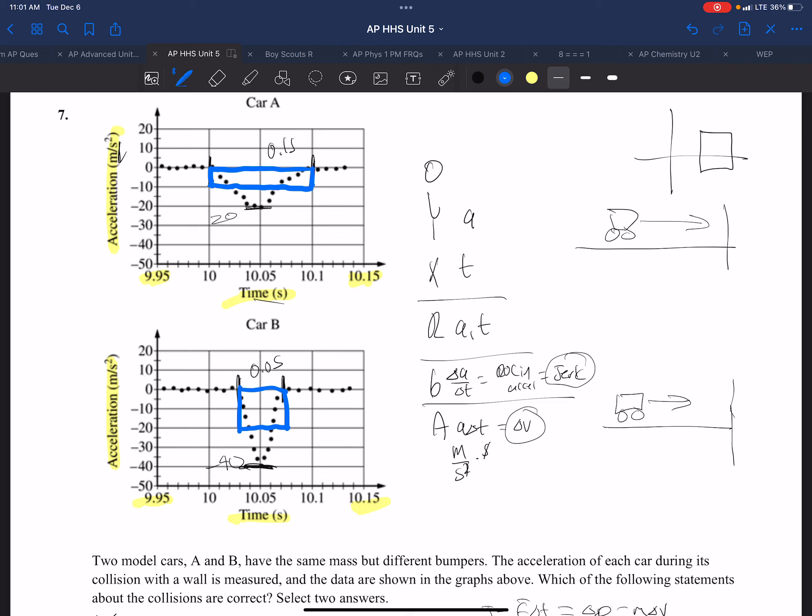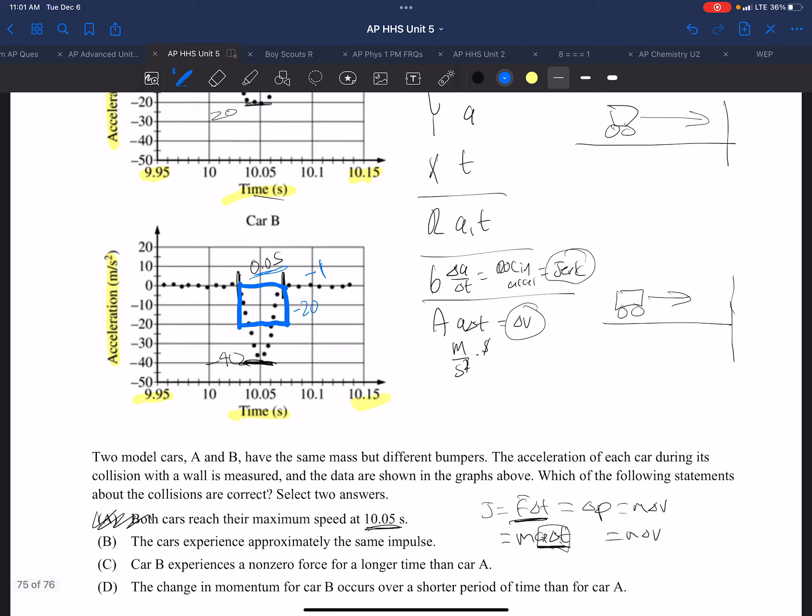And if we put numbers to it, this is 0.05 and this is minus 20, and this is 0.1 and this is minus 10. So 10 times 0.1 is minus 1, and if we have minus 20 times 0.05, we get minus 1. So the areas are equal.